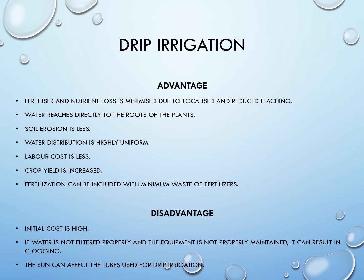Disadvantages of drip irrigation: initial cost is high, if water is not filtered properly and equipment is not properly maintained it can result in clogging, and the sun can affect the tubes used for drip irrigation. But if we compare both sides, advantages are more than the disadvantages, hence these methods are gaining popularity in modern days.